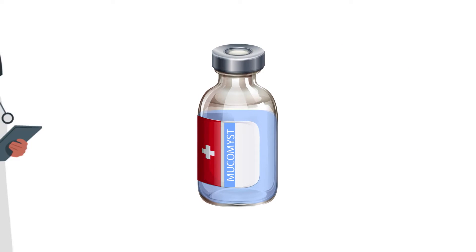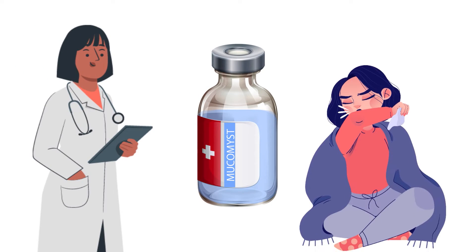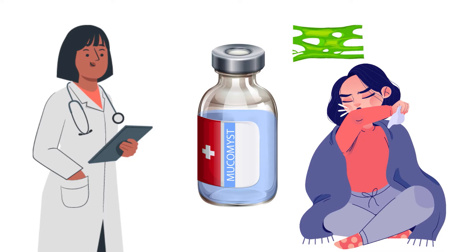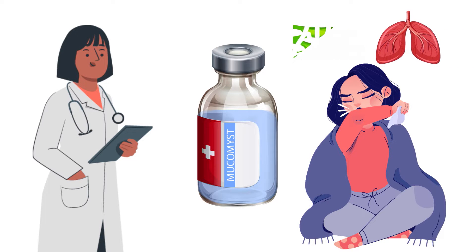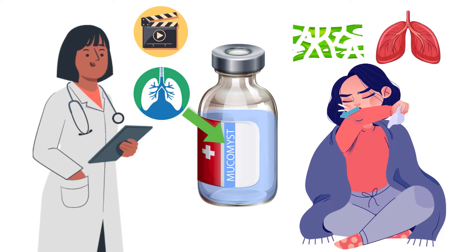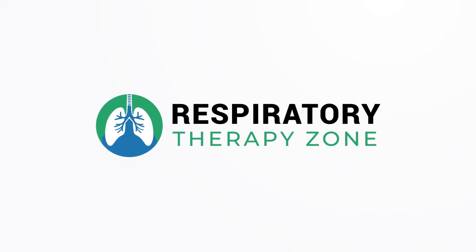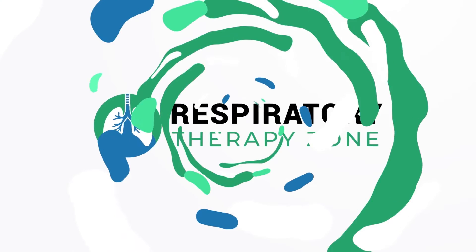Mucomist is a prescription medication used to treat or prevent the buildup of mucus in the lungs. It works by breaking down mucus, which makes it easier to cough up for removal. In this video, we will provide an overview of Mucomist, including its uses, dosage, side effects, and more.